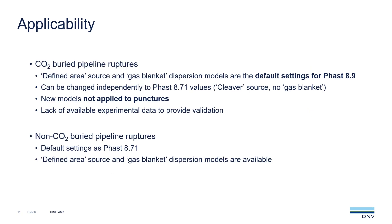So where are the new models set as default in FAST 8.9? First, let's consider CO2 buried pipeline ruptures. The validation for FAST 8.9 is significantly better than for FAST 8.71 for the available CO2 rupture experiments, so we've made them the default settings in FAST 8.9. The defined area and gas blanket models will be automatically selected for any CO2 pipeline ruptures. It's worth noting that given the almost complete lack of experimental data, we've not applied the new models to punctures, just ruptures. For non-CO2 buried pipelines, the default settings remain as in FAST 8.71. The new models are available, but you have to explicitly make them applicable to all buried pipeline ruptures.